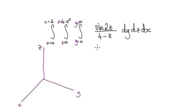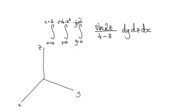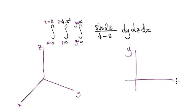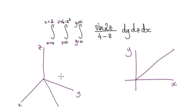We have no idea what our region looks like, but let's just blindly draw this. Y equals x — if you look at the 2D representation of y equals x, it's just a straight diagonal line. So let's imagine it to look something like this in 3D space. So this is our line y equals x.